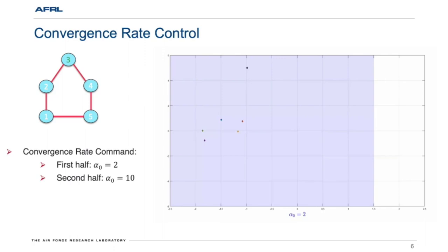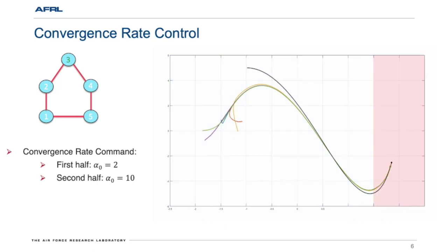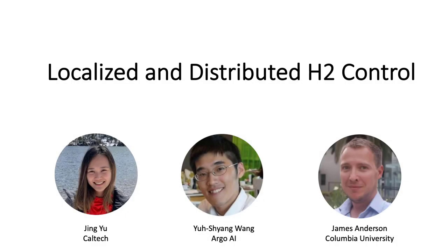Finally, to illustrate the efficacy of the proposed algorithms, we consider a multi-agent system with five agents. For the first half, the convergence rate command is set to alpha_0 equal to 2, and for the second half, it is set to 10. As we can see here, the black dot is the tracking command. For the first half, agents lag behind. But for the second half, they can track the target much more closely.